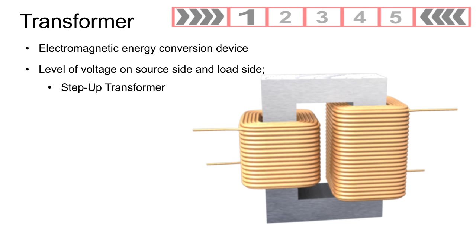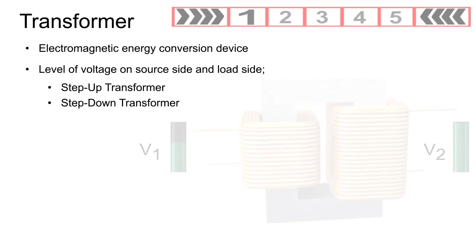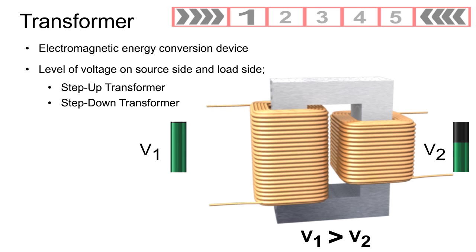Step up transformer: When we receive energy at one voltage and deliver it at a higher voltage, it is called a step up transformer. Step down transformer: When the energy is received at a higher voltage and delivered at a lower voltage, it is called a step down transformer.